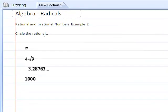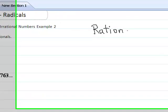In example number 2, we are to circle the rational. In order to do that, we first have to remember what a rational is. A rational is just a number that can be written as a fraction.